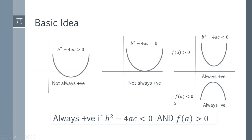A function is always positive if this discriminant is less than zero and when you substitute in a value for a this is greater than zero. If you wanted to prove it's always negative you would also use this case but you would just switch this round and show that this is less than zero.